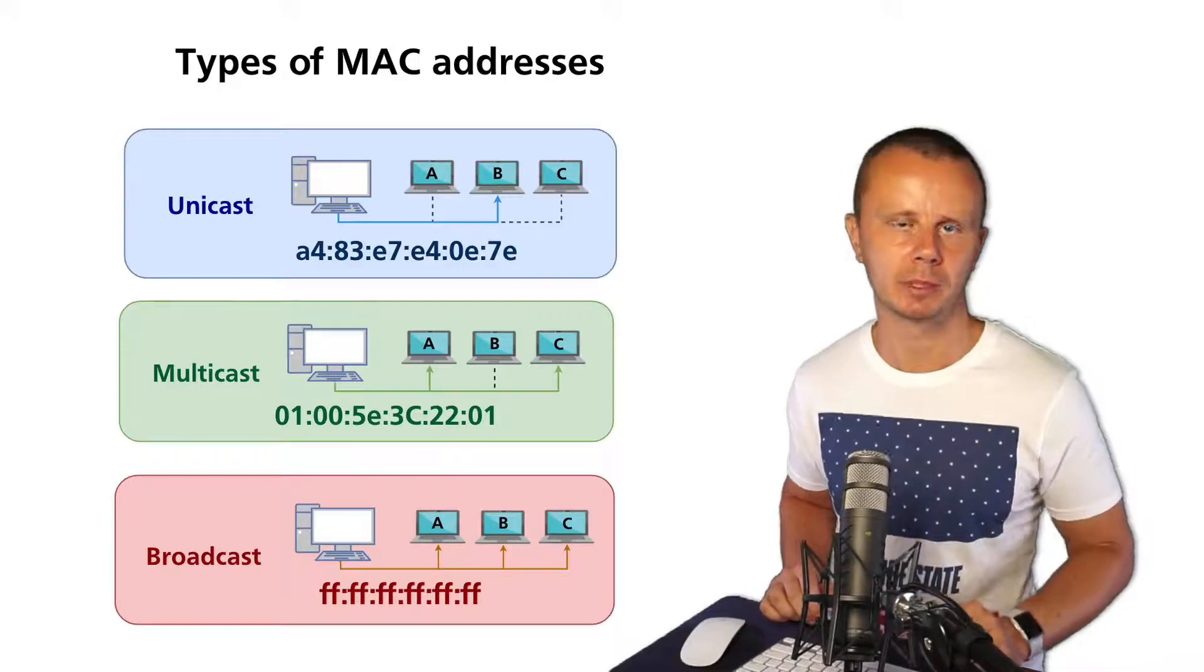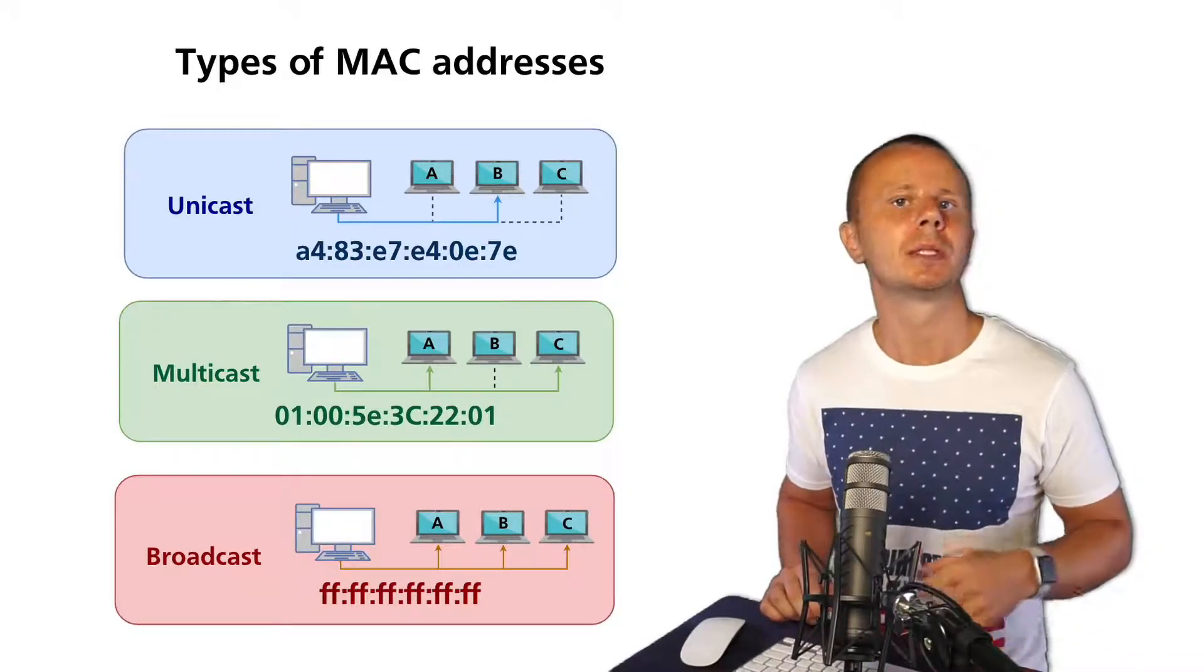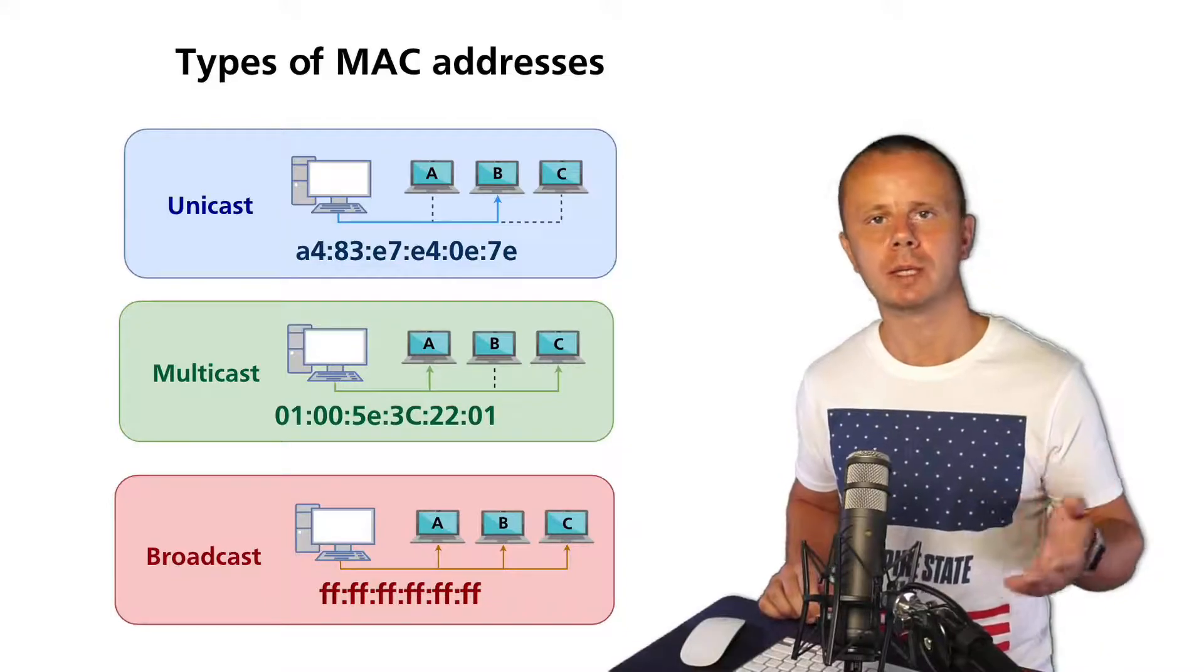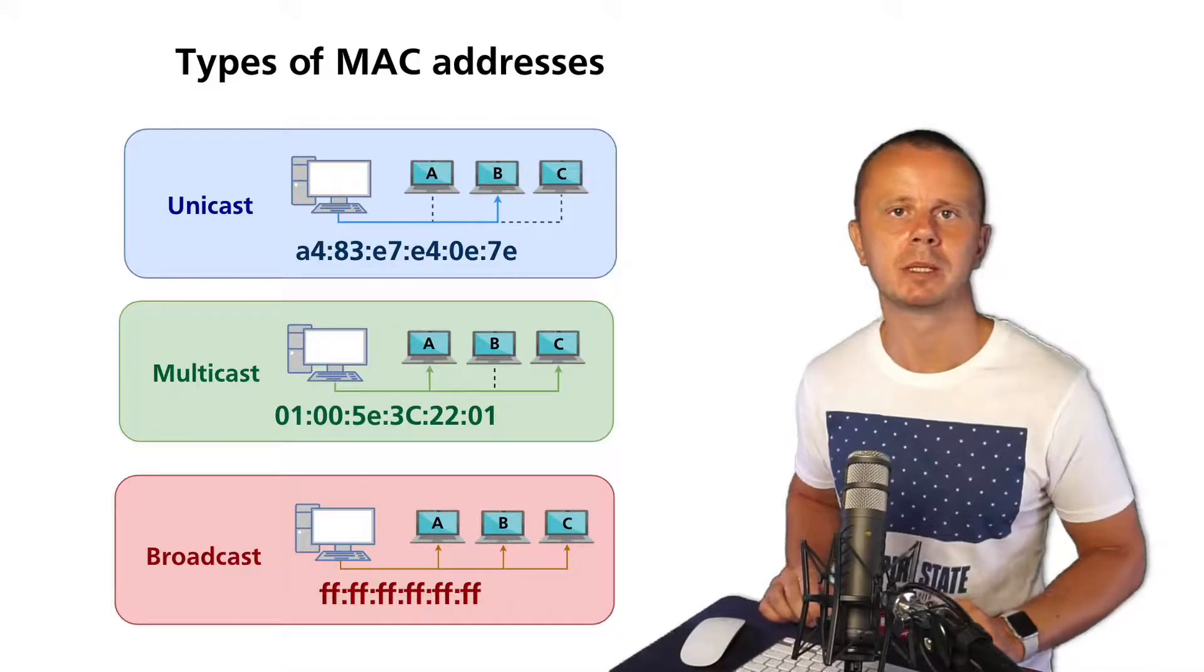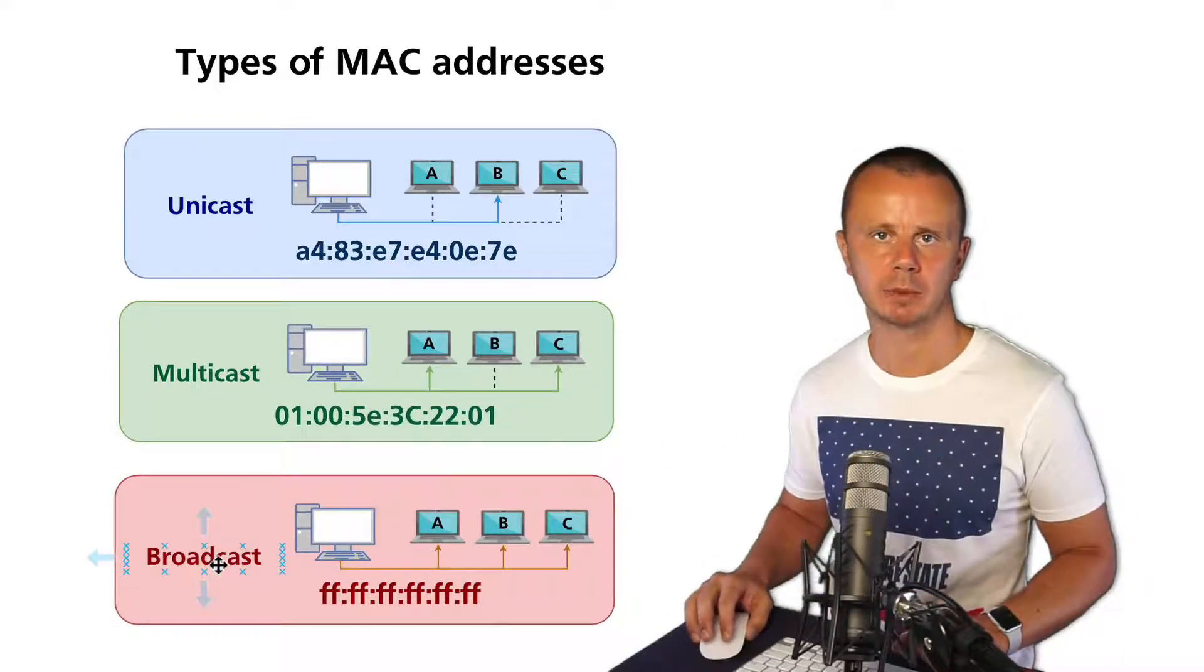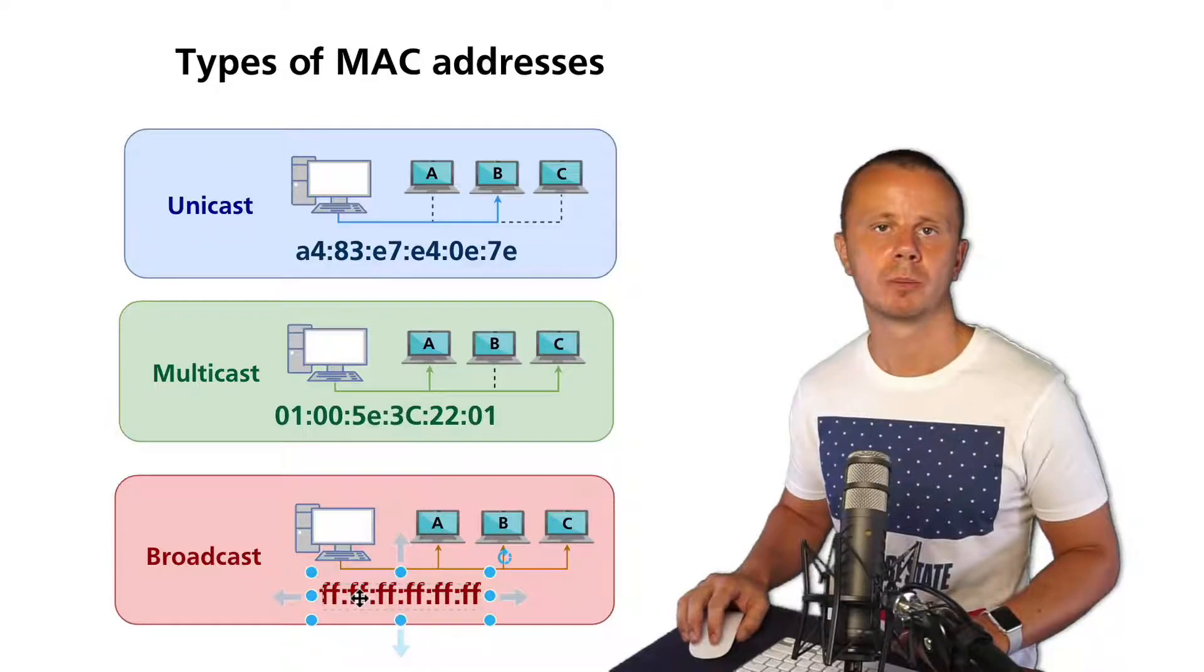Of course, multicast MAC addresses can only be used as destination MAC addresses. If a switch detects a source MAC address set to a multicast MAC address, such frame will be simply discarded. So that is multicast MAC address. And finally, broadcast MAC address.